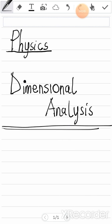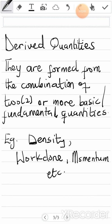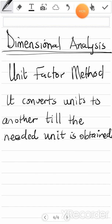Hi everybody, welcome to Fancy Learning Videos. Today our subject is physics and we'll be talking on dimensional analysis. These quantities are basic quantities, meaning they combine to form other quantities called derived quantities. Before you get derived quantities, you have to understand fundamental or basic quantities, such as mass, length, time, and temperature. From the combination of two or more basic quantities, we get derived quantities like density and momentum.